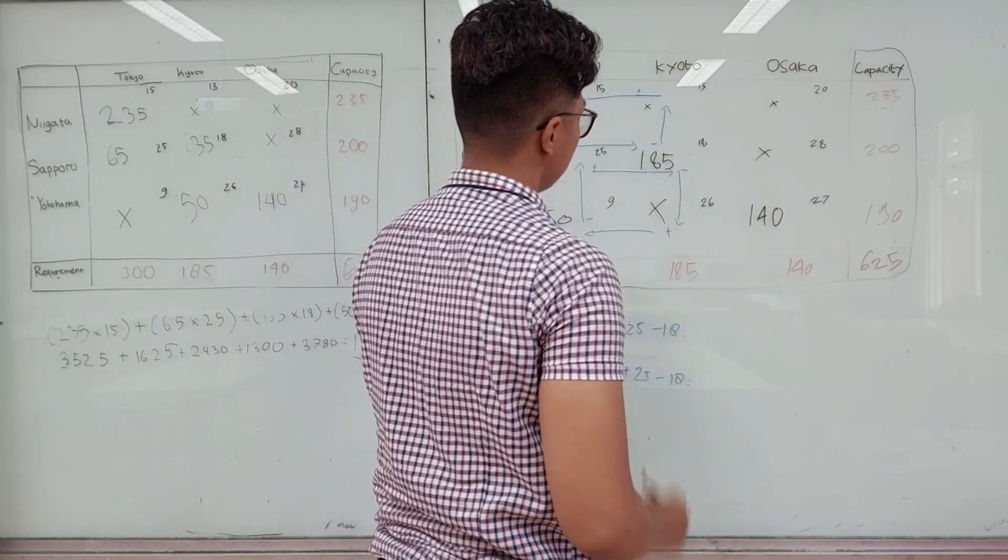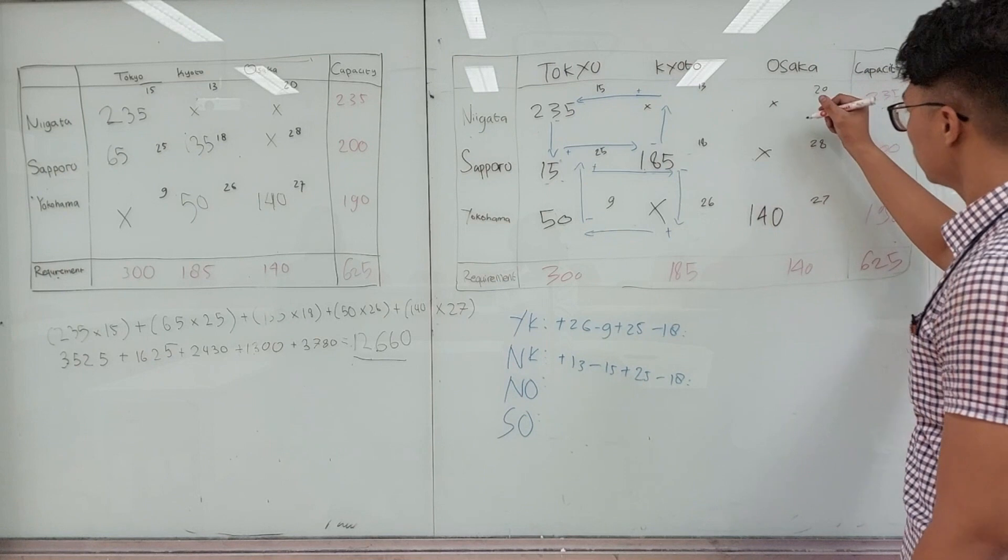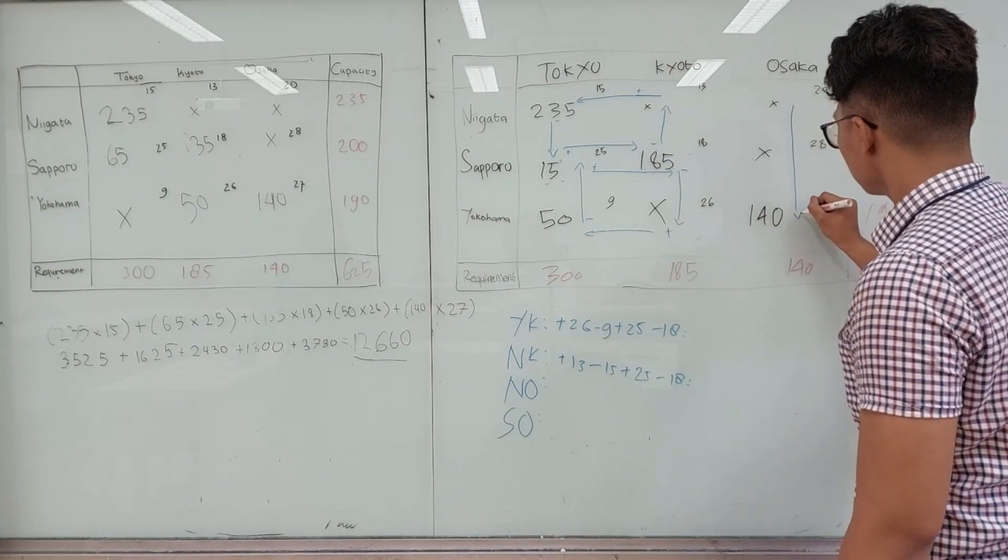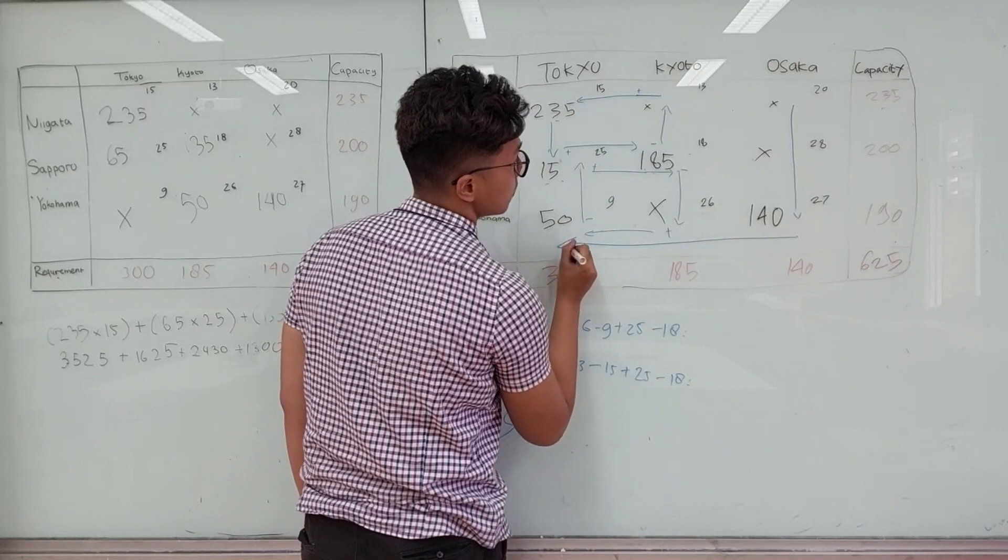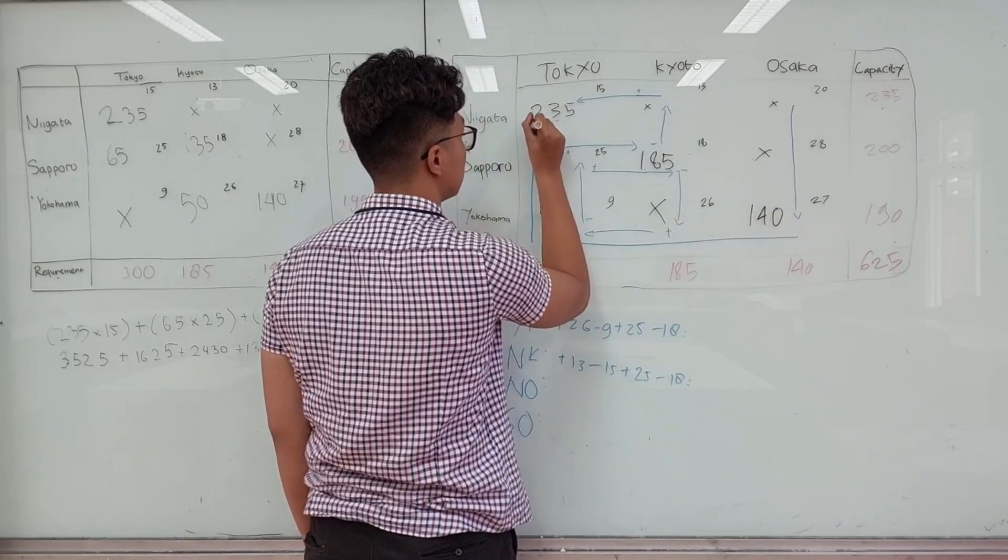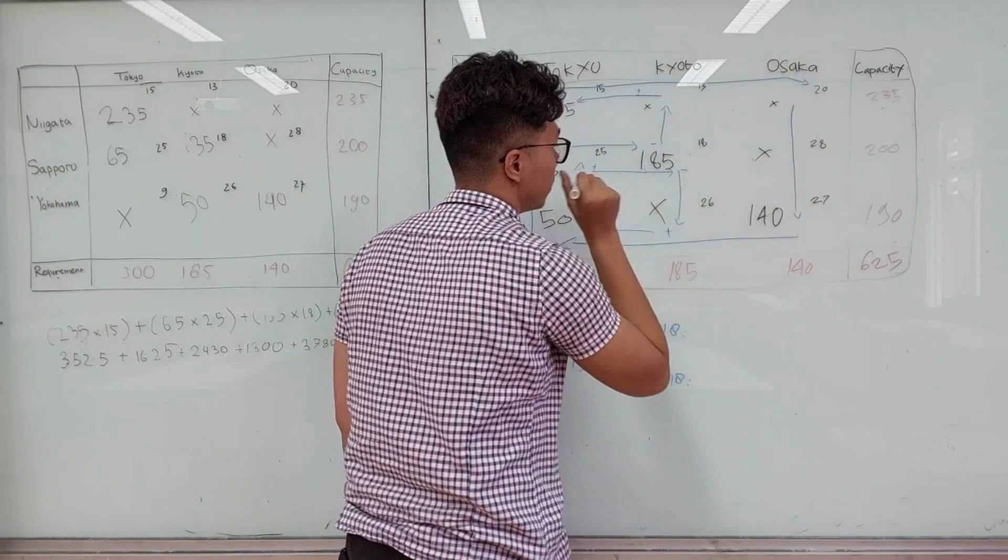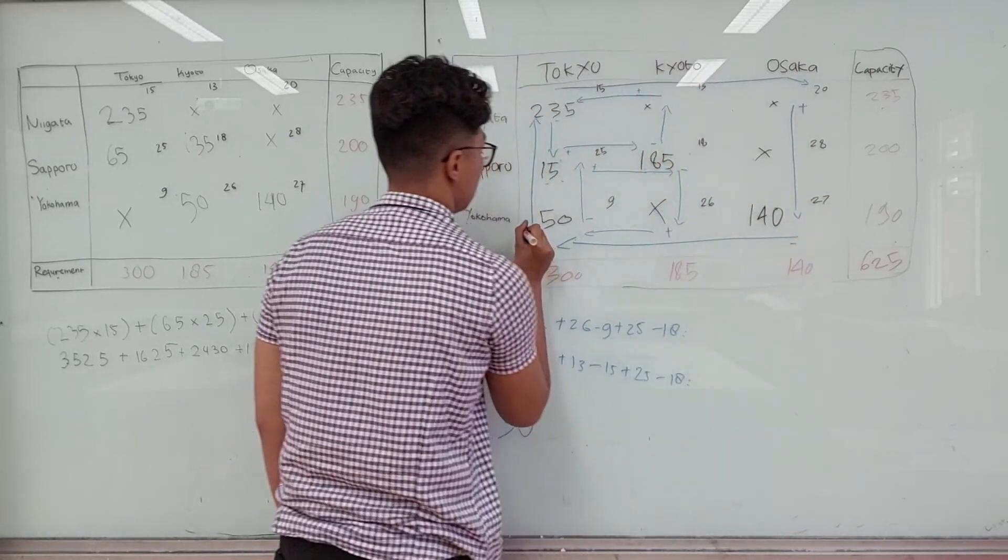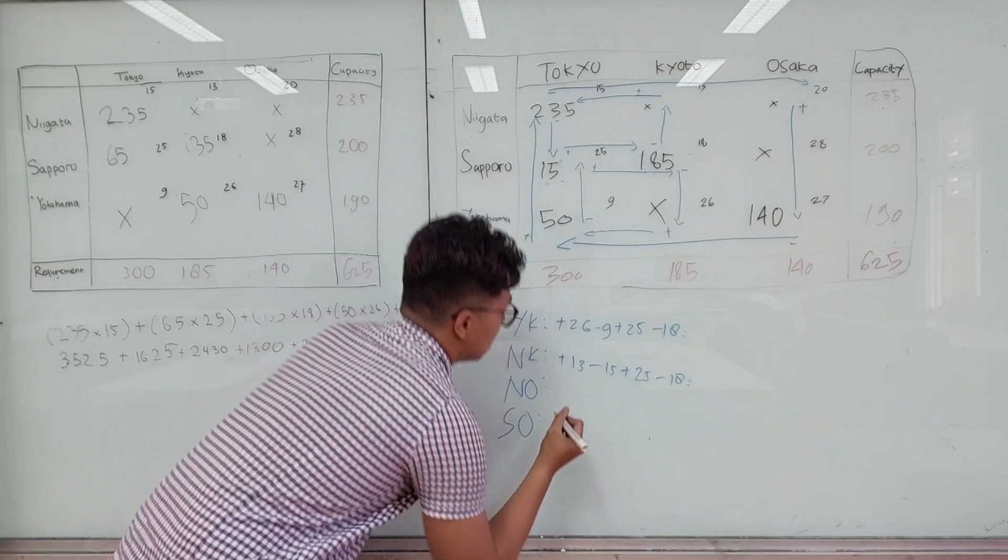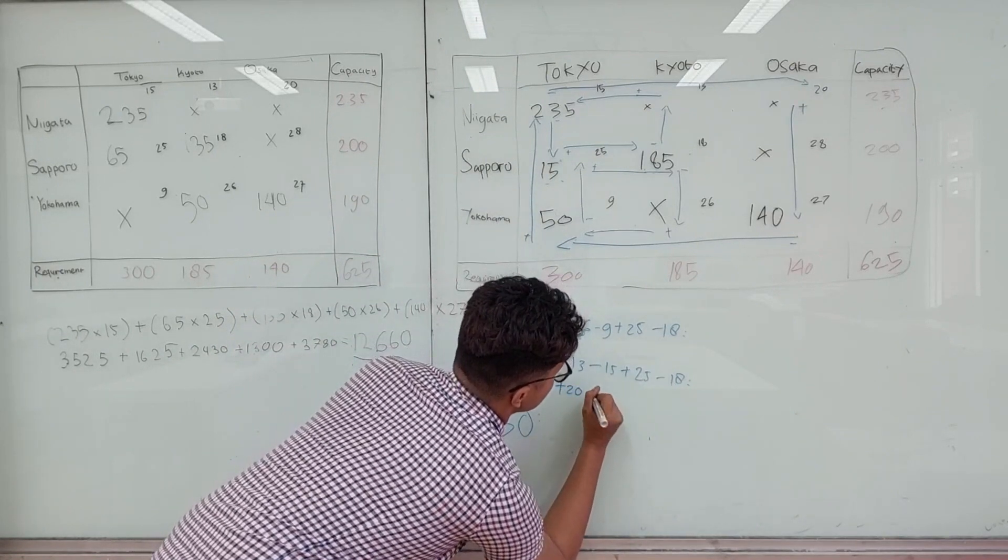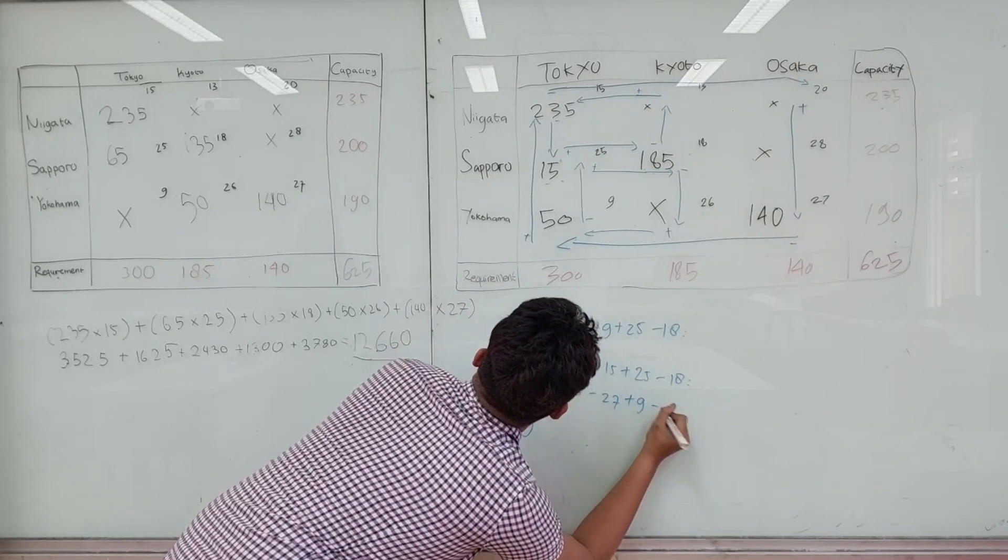I think we should go here, there's a blank spot. So, we go from here, and here, and up here. There is a positive, negative, positive and negative. So it would be plus 20, minus 27, plus 9, and minus 52.